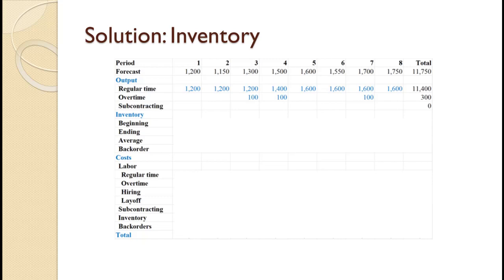As we did with the first example, we will work out all the inventories first before starting on the cost. For period one, the beginning inventory of 50 was given. That 50 plus total production of 1200 minus the forecast of 1200 leaves an ending inventory of 50. 50 beginning inventory and 50 ending inventory averages to 50, with no back orders. For period two, the forecast is 1150 and total production is 1200, so inventory goes up from 50 to 100, giving an average inventory of 75 with no back orders.